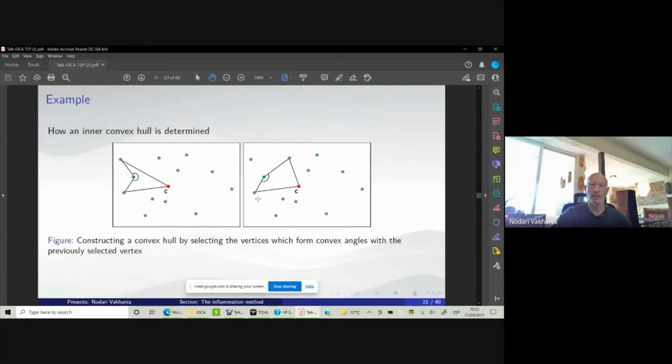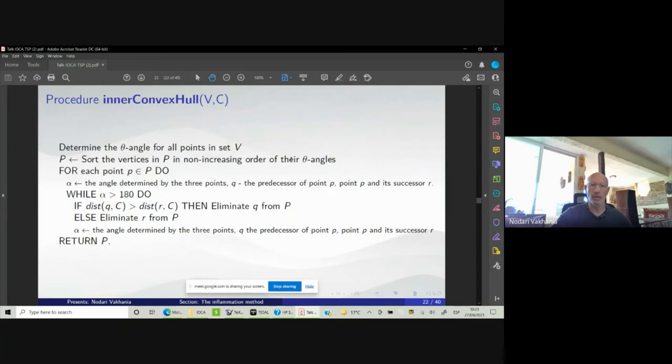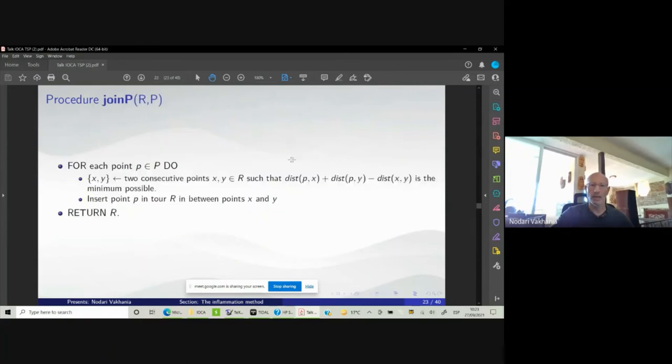Once we discarded this vertex from the consideration while constructing our convex hull at iteration i, the next vertex in the sorted list according to the theta angles is this vertex. We repeatedly check the same condition. In this case, the angle is not more than 180 degrees, so these three vertices remain in the polygon pi that is constructed at iteration i. This is the formal description of this procedure.